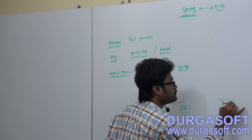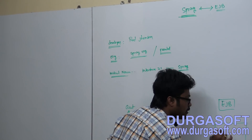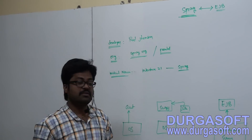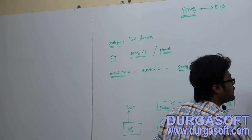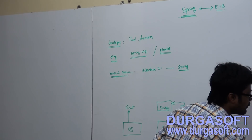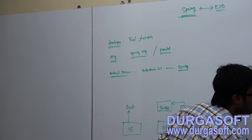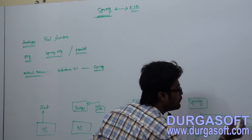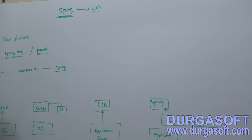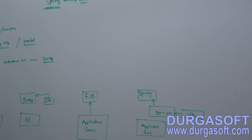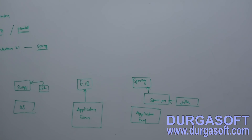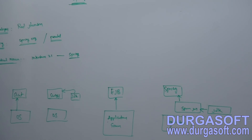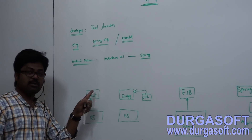Similarly, EJBs have a dependency on application servers, so EJBs are heavyweight. Springs are not having any dependency on an application server. Without an application server, using simple Spring JARs along with your JDK is enough. So to execute EJB classes, you must have an app server, but Spring classes can execute without one. AWTs are heavyweight; Swings are lightweight.